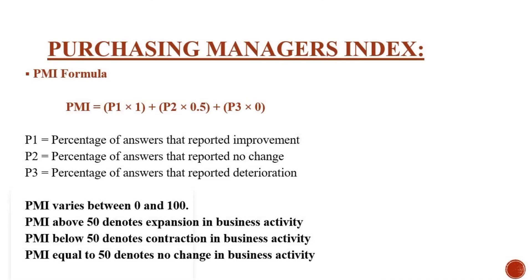In general, PMI value varies between 0 and 100, and this PMI value is calculated every month. A PMI value above 50 denotes an improvement in business activity compared to the previous month. A PMI value below 50 denotes a decrease, and a PMI value equal to 50 denotes no change in business activity compared to the previous month.